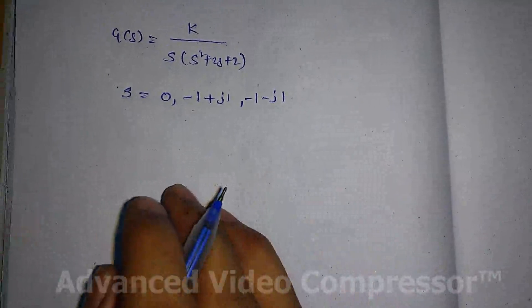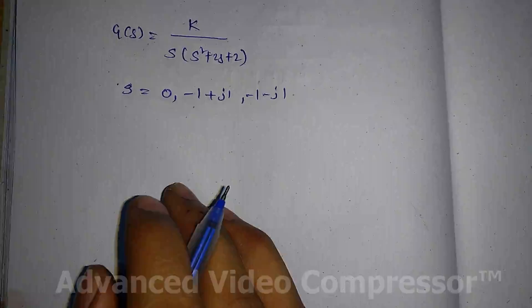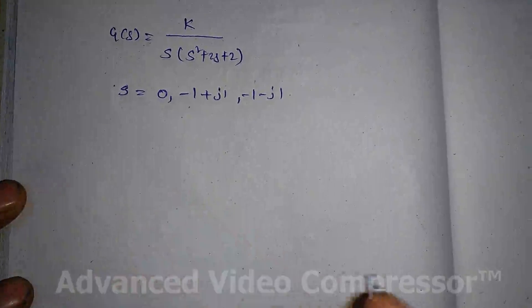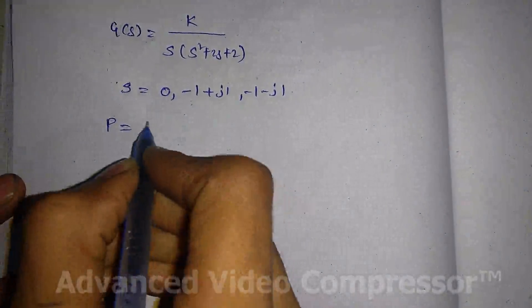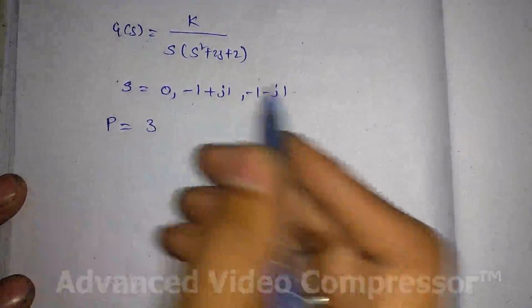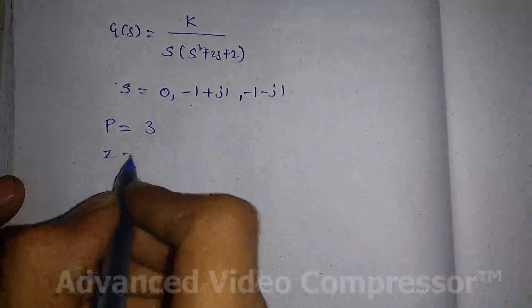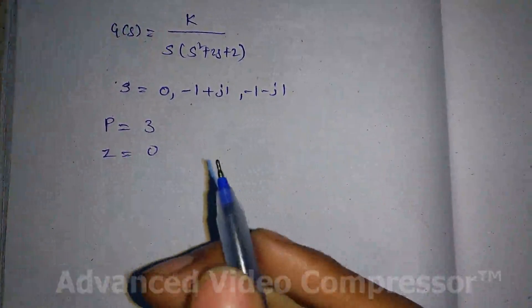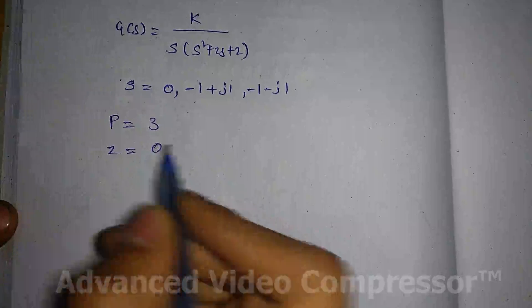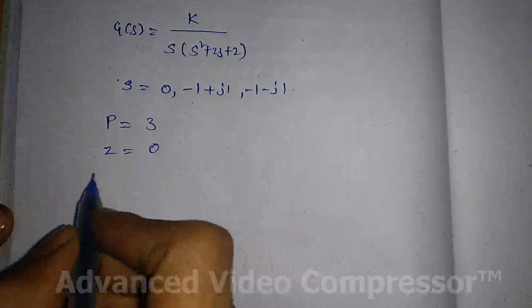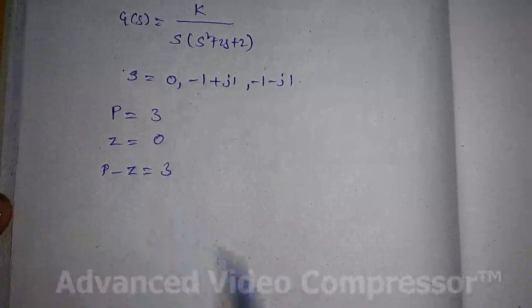Next, let us take the number of poles and number of zeros. Let P denote the number of poles — that is equal to 3. The number of zeros is 0; there are no zeros, since equating the numerator equal to 0 gives only the constant gain K. You should also calculate P minus Z, which is equal to 3.